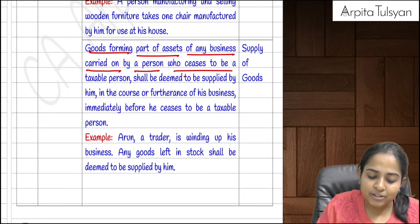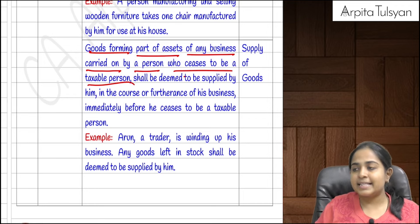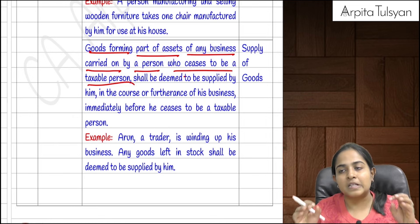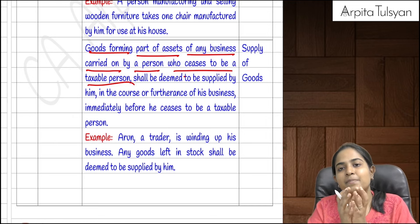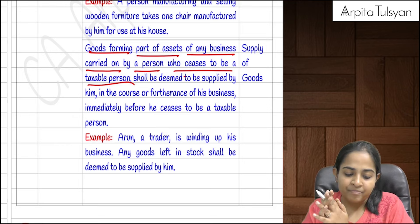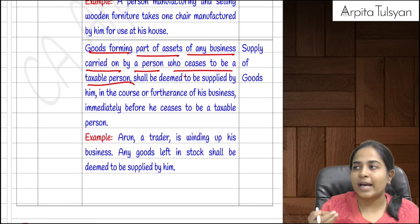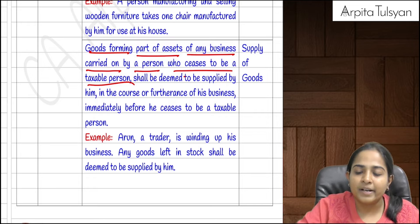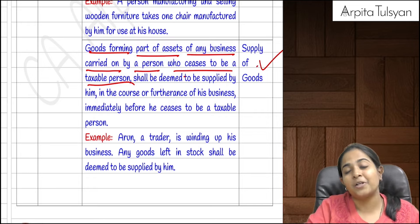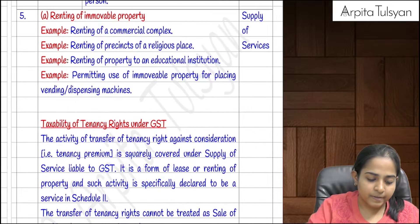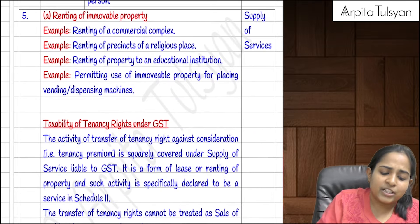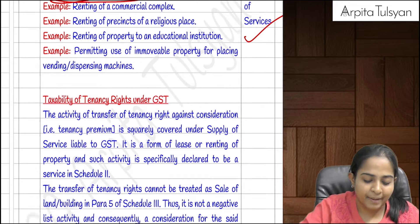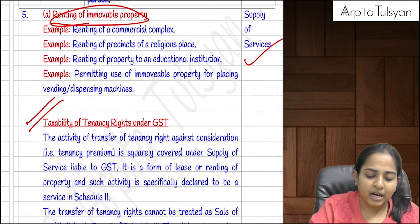Goods forming part of assets of any business carried on by a person who ceases to be a taxable person — if a person is winding up and whatever stock or goods are left are disposed of, that transaction is called supply of goods. Renting of immovable property is supply of services. An important point: in case of renting of immovable property, tenancy rights and tenancy premium are also covered under GST.